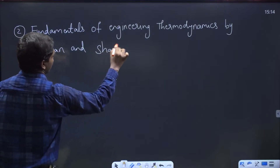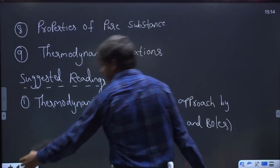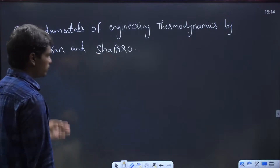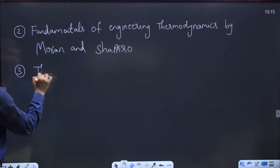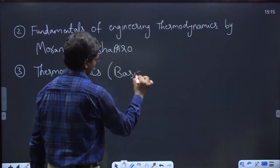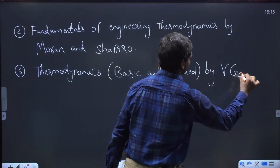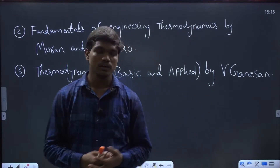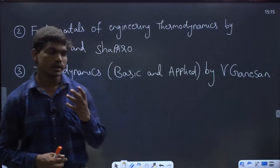The second book you could go for is Fundamentals of Engineering Thermodynamics by Moran and Shapiro. This is also a really good book, especially for the later chapters like entropy and availability, which are very well explained in this second book. The third book is Thermodynamics: Basic and Applied by Nag, which provides in-depth understanding for problem solving using the concepts of thermodynamics.